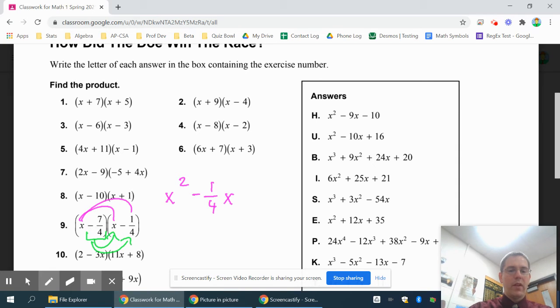So negative 7 fourths times x is negative 7 fourths x. And then a negative times a negative is a positive. And then 7 fourths times 1 fourth is 7 over 16.